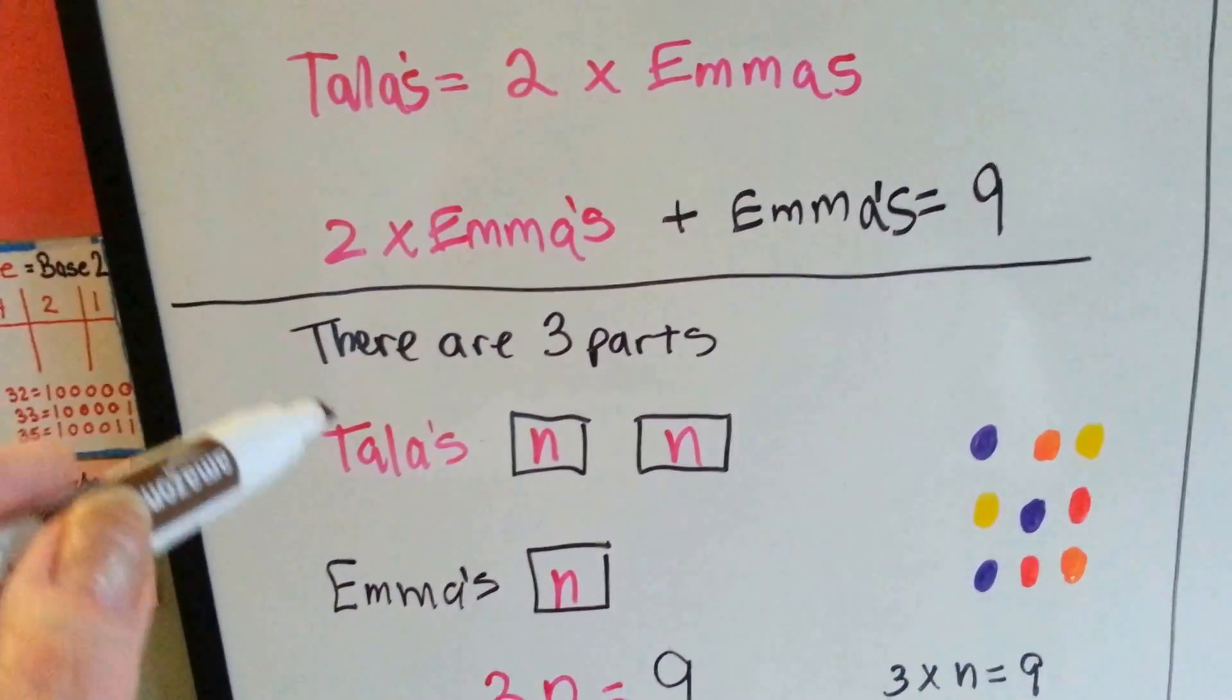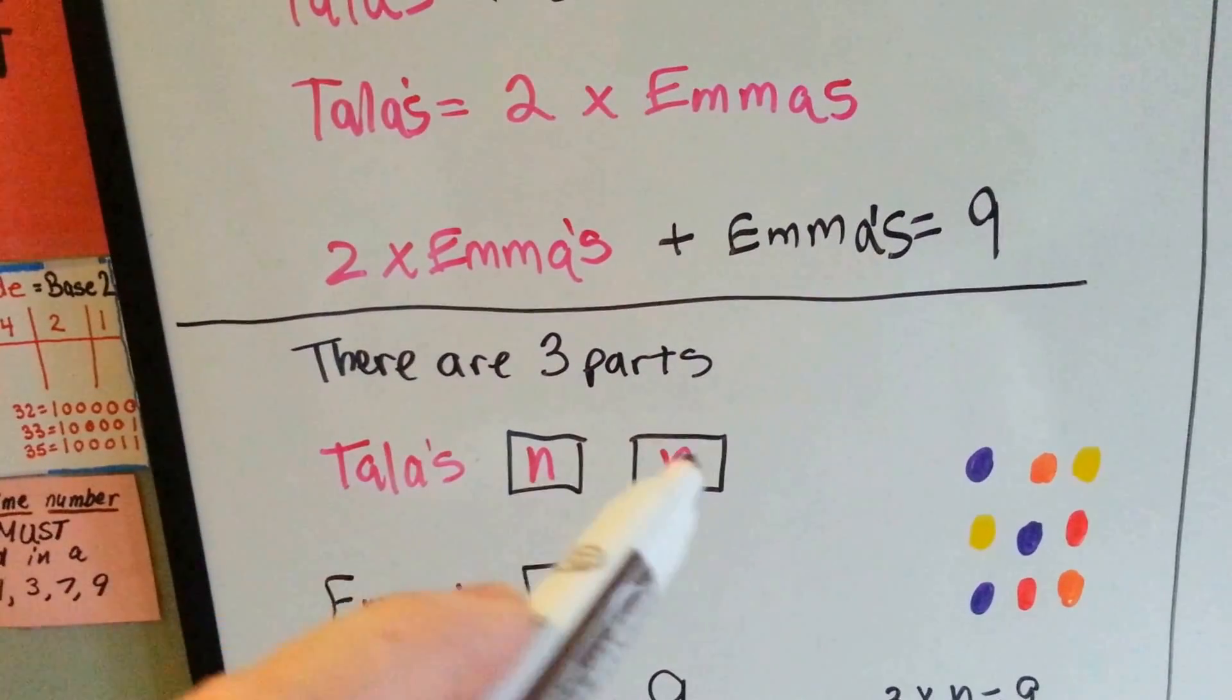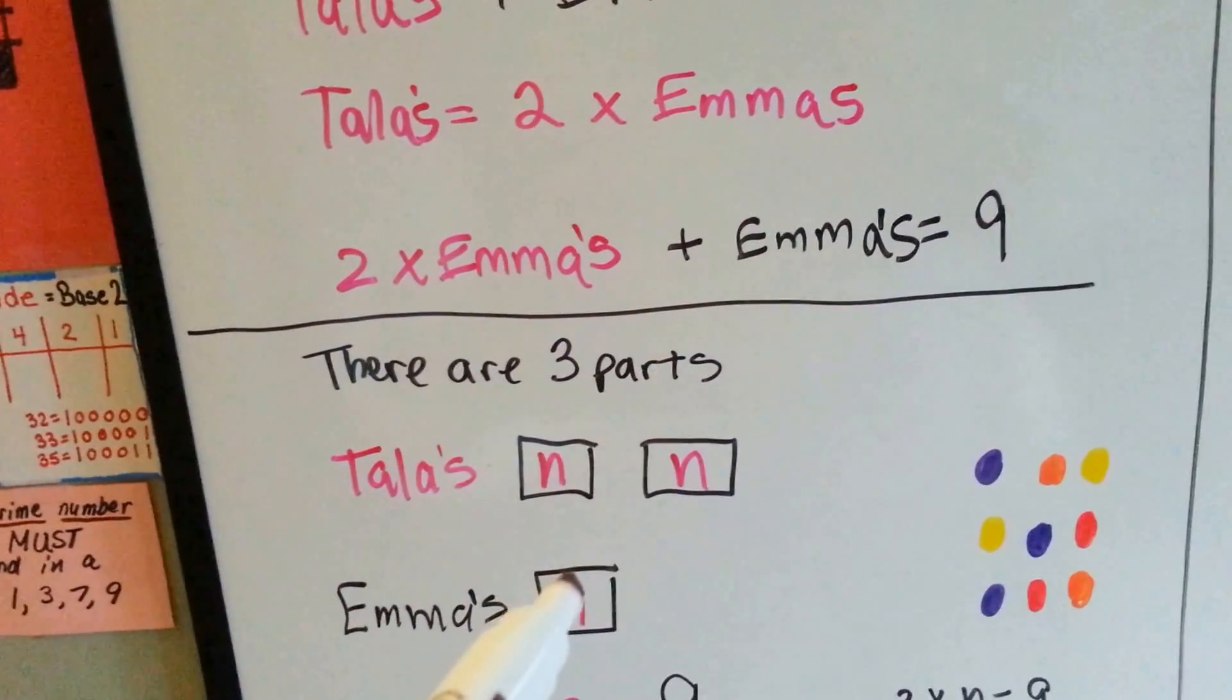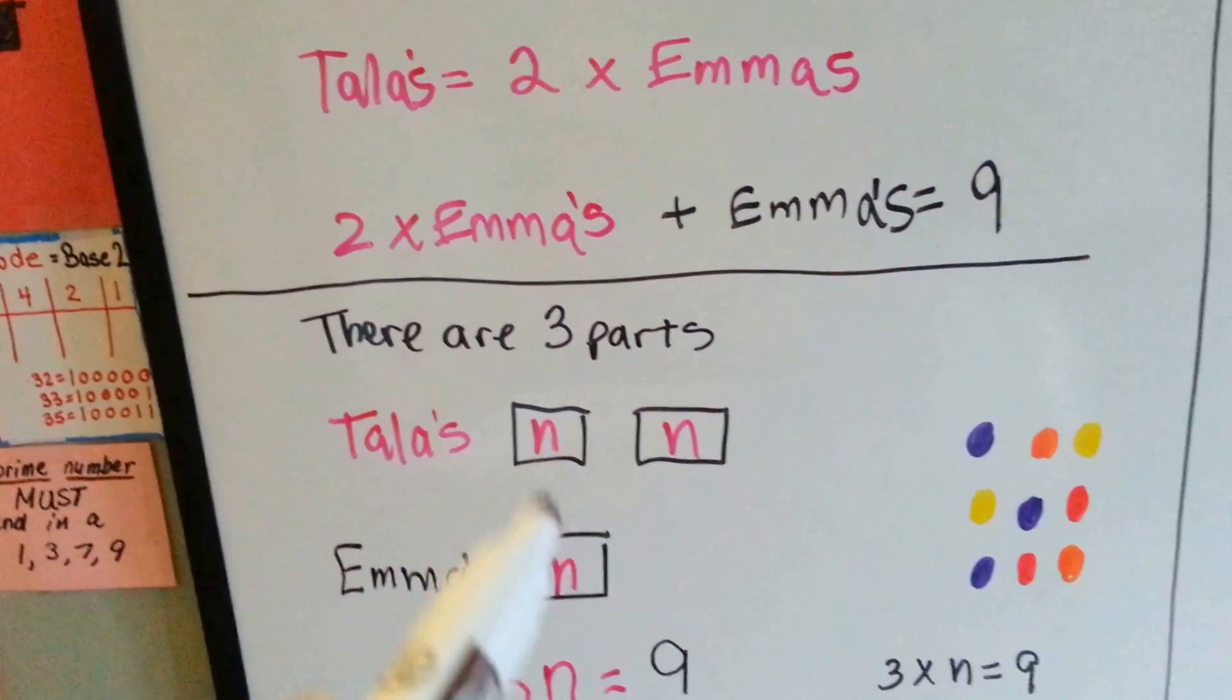One, two, three. Tala has two times whatever Emma has, and Emma has just one of them. So if we had to split nine into these three parts,